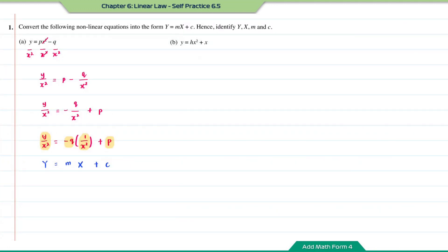Question B: we want to turn the non-linear equation y equals hx squared plus x into a linear equation. On your right-hand side, you can only have one term that contains the variable x. Therefore, I'm going to divide every term by x. By doing this, you get y over x equals — cancelling the x — hx plus 1, since x divided by x equals 1. By comparing with y equals mx plus c: y over x is the y, h is the m, x is the x, and positive 1 is the c.